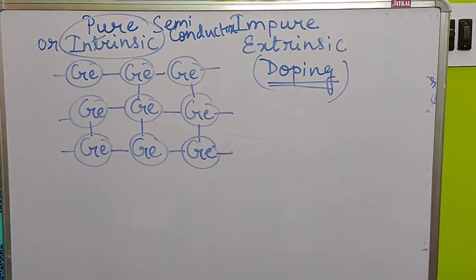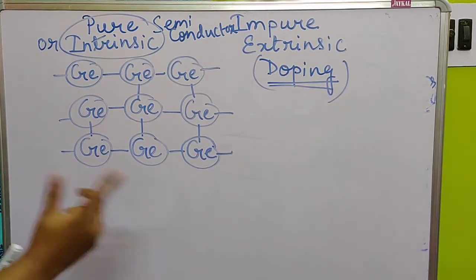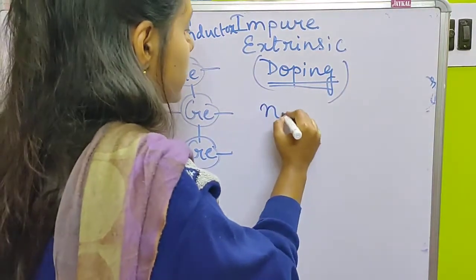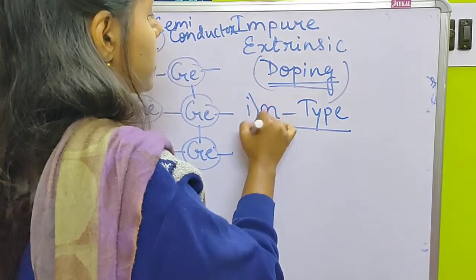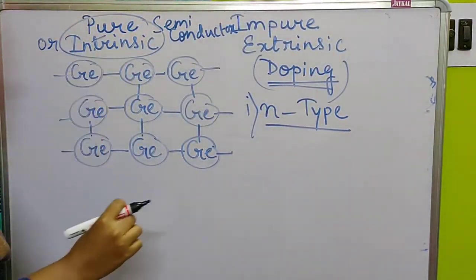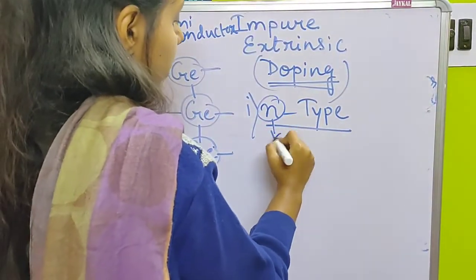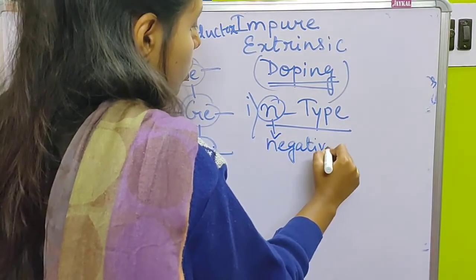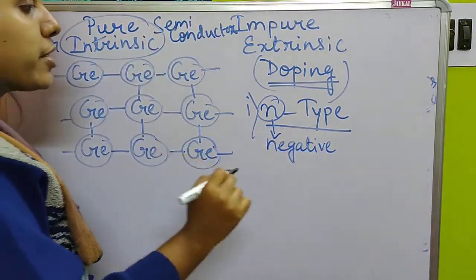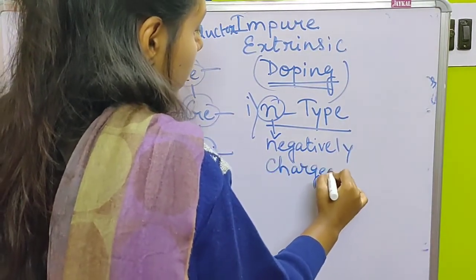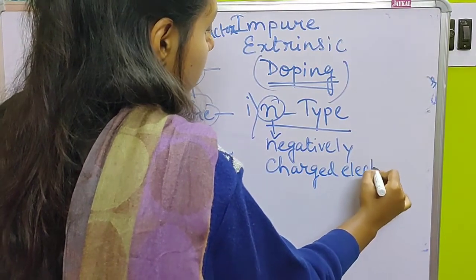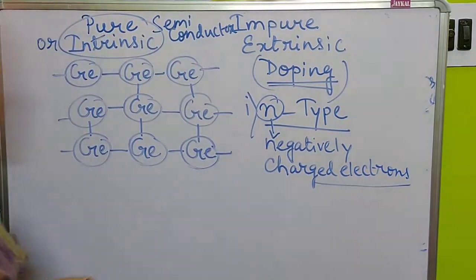Depending on the impurities added, there are two types: N-type and P-type semiconductors. In today's class we will also discuss these two types. So first, copy the chart, and then we will discuss each type.